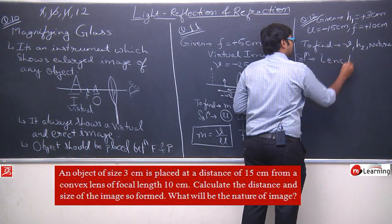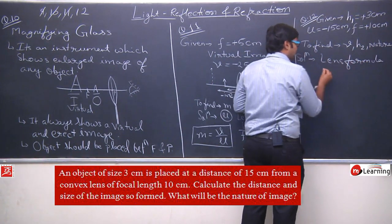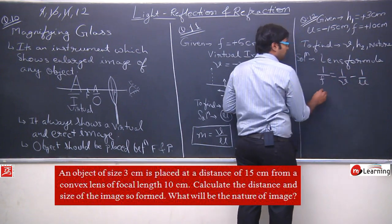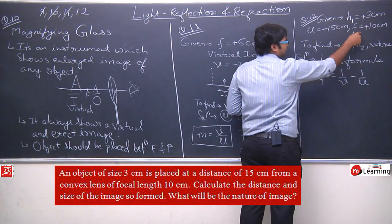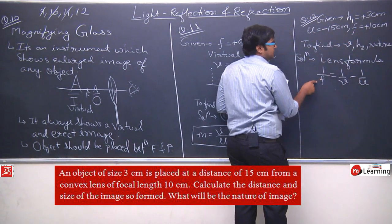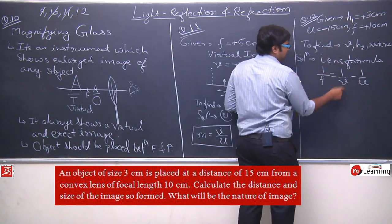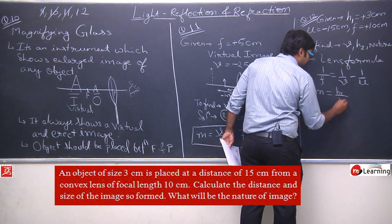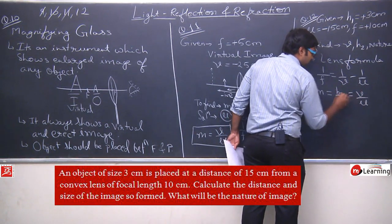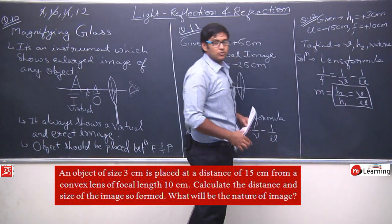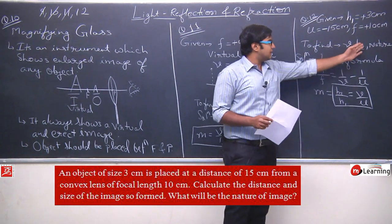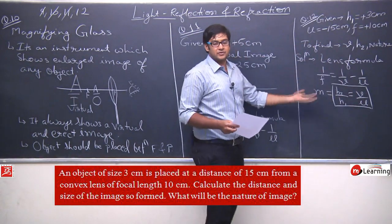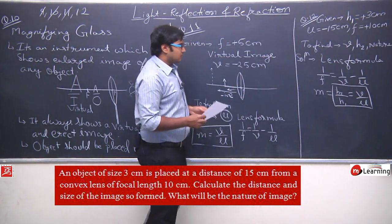Apply lens formula: 1 upon f is equals to 1 upon v minus 1 upon u. You have u and f, you need to calculate v. Is mein bas f ka value substitute karna hai, then u ka value substitute karna hai aur v calculate karna hai. Aur v ke calculation ke baad, we will use magnification: h2 upon h1 is equals to v upon u. Using this formula, h2 ko pata kar sakte hain. Agar h2 mil gaya aur v mil gaya, then bahut aasani se hum nature bhi bata sakte hain. Just mathematical calculation is left, so you can note this.